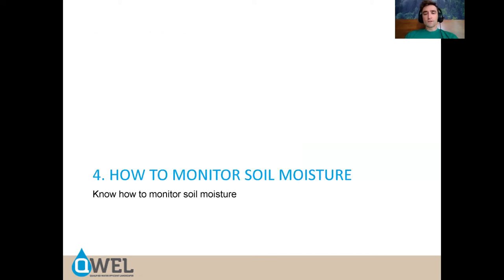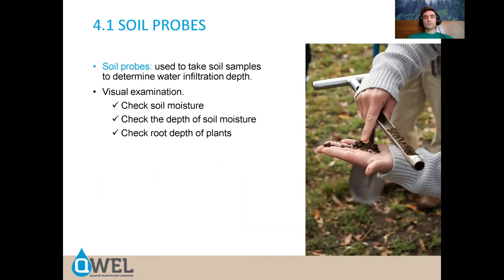Let's talk about how to monitor soil moisture. A soil probe is used to take a soil sample at depth — you get a core sample where you can look at different lengths and see whether the soil is moist and whether irrigation is reaching the depth it should. You can buy a soil probe or pick up an apple corer at the dollar store, which is basically the same thing but cheaper and smaller. It's used for visual examination.